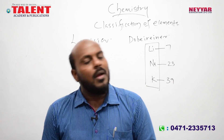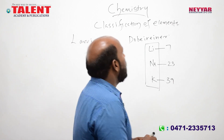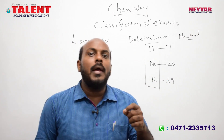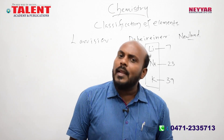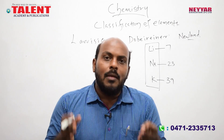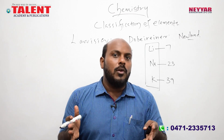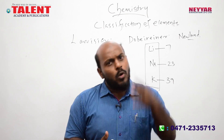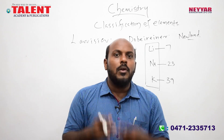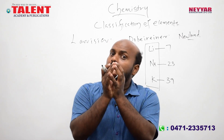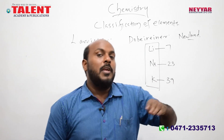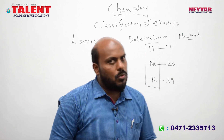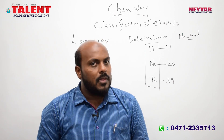The next classifier after Döbereiner is Newlands. The second classifier is Newlands. John Alexander Newlands is the name. John Alexander Newlands. During his time, the number of known elements was around 56 elements. How many natural elements are there? Newlands was a chemist who worked with 56 elements.